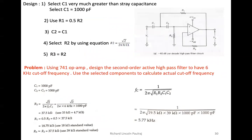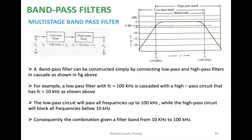We had solved the problem till here and got about 577 kilohertz. Today we'll be looking into band pass filters. As the name suggests, a band pass filter allows a certain band to be passed. You can see that initially there is a cutoff, and here also it's a cutoff, but only the middle portion is actually transferred. You can imagine it as a combination of both low pass and high pass filters.